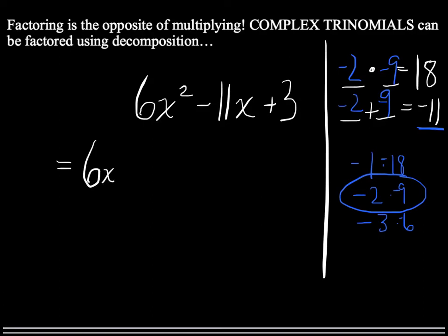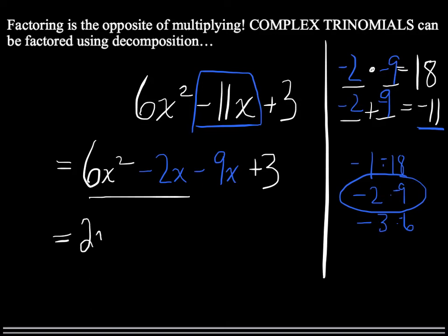We have a 6x² and a 3, and in the middle we will break down this -11x into -2x and -9x. Okay, let's see. The two first terms, 6x² - 2x, the common factor there is 2x. So we have 2x times (3x - 1).